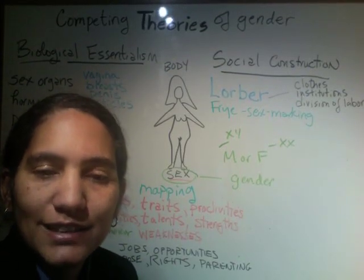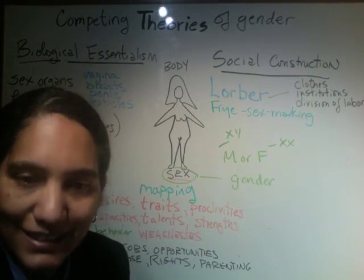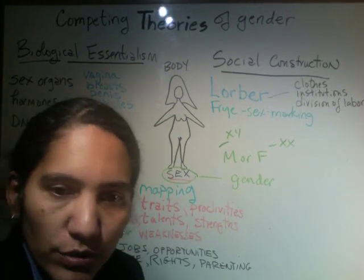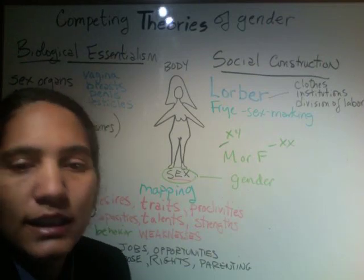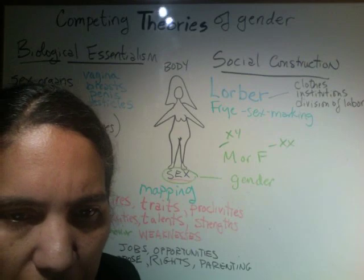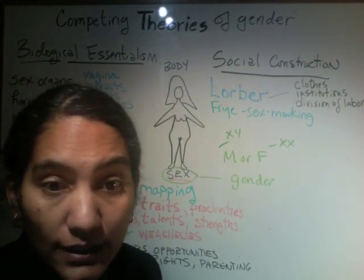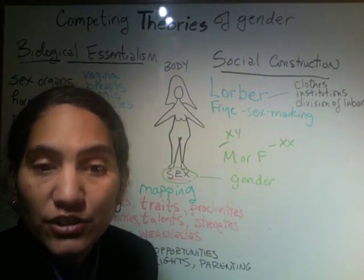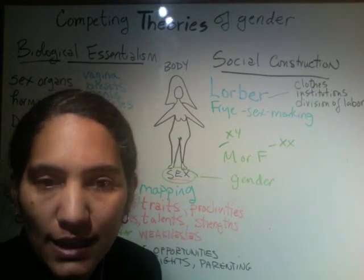So biological essentialists will argue there is something essentially male or essentially female about differently bodied people. If you know somebody's physical facts — their sex organs, hormones, and chromosomes — then you actually know something essential about them. By 'essential,' I mean something innate, something that is a part of who you are — it's your essence. A biological essentialist believes that there are certain essential characteristics that men and women have on the basis of biology.